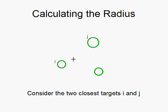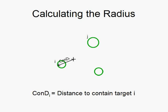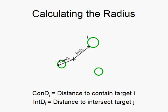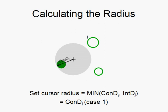To calculate the radius of the cursor we consider the two closest targets. We define ConDi as the length required to completely contain the closest target, and IntDj as the length required to intersect the second closest target. We set the cursor radius as the minimum of these two values.